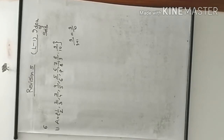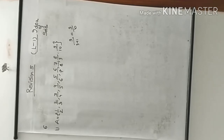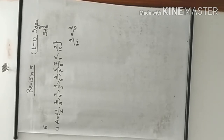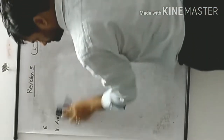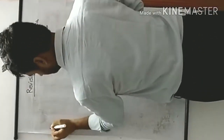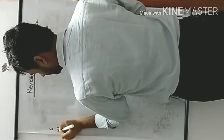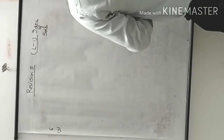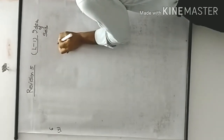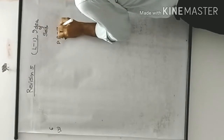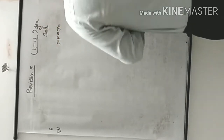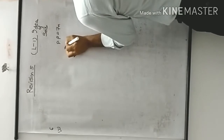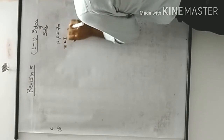This was exercise 1A, question 6 first part. Now I am taking question 6, fifth part: p such that p = 7m, where m is an integer, m is an element of integers.